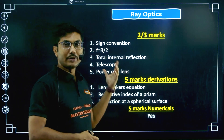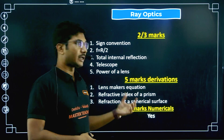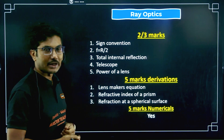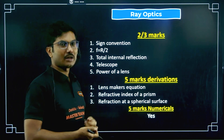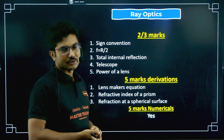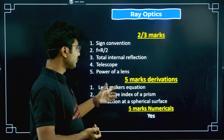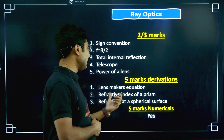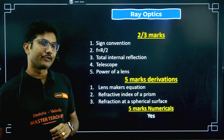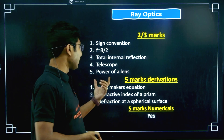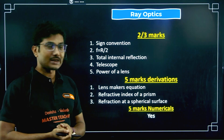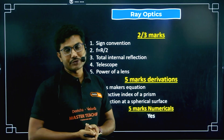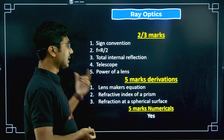Five-mark numericals will come from this chapter and are generally easy, so if you practice numericals you can answer them well. Either — if the derivation comes from lens maker's formula, then refractive index of a prism based numerical questions will come. If refractive index of a prism is the derivation, then lens maker's equation related numerical questions are highly likely to come.